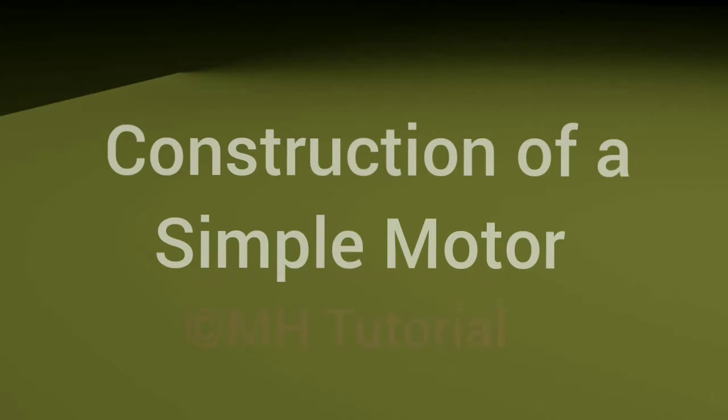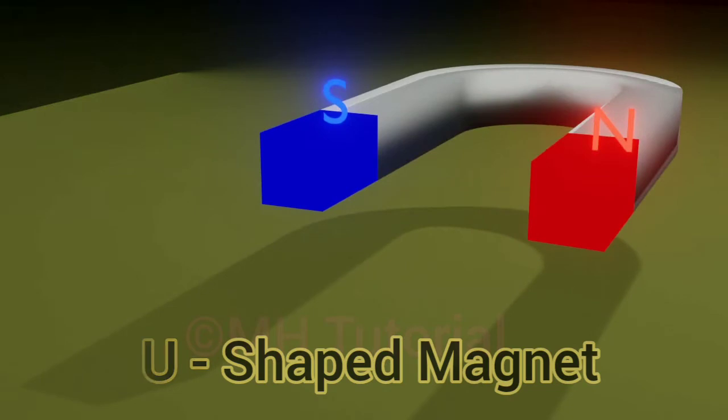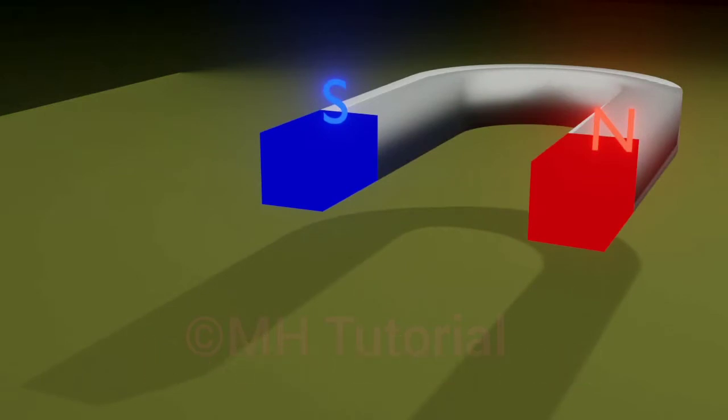In a simple motor, the two poles of a horseshoe magnet are placed very close to each other. The lines of magnetic field are always oriented from the north pole to the south pole. These green particles are pointing to the lines of magnetic force.